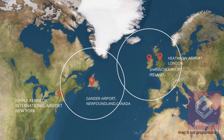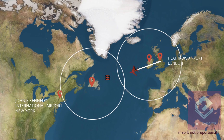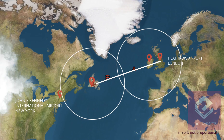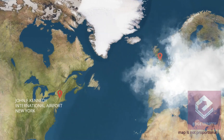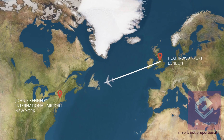If a twin-engine aircraft flying from LHR to JFK has an emergency at point A, it can safely return and land at Shannon Airport. If it has an engine failure around point B, it can safely land at Gander Airport. Otherwise, the aircraft can safely complete a direct path journey between LHR and JFK. Such a flight saves a great deal of fuel, offers better comfort for passengers, and allows airlines to operate more flights.